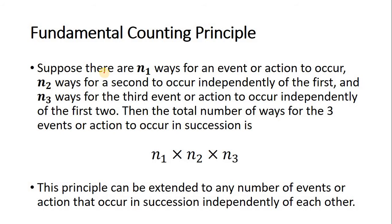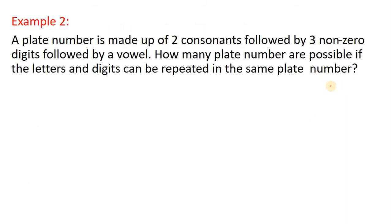By definition, the fundamental counting principle: suppose there are N-sub-1 ways for an event or action to occur, and N-sub-2 ways for the second to occur independently of the first. Then the total number of ways for the events or actions to occur in succession is the product of N-sub-1, N-sub-2, and N-sub-3. This principle can be extended to any number of events or actions that occur in succession independently of each other.